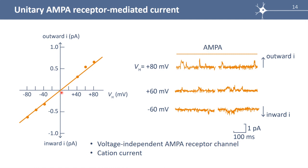Normally, the reversal potential indicates which ions cross the channel. This reversal potential does not correspond to any of the equilibrium potentials we studied before: E_Na is around plus 58 millivolt, E_K is around minus 90 millivolt, and E_calcium is nearly plus 120 millivolt. This means the channel is permeable to more than one ion type. The fact that the IV curve is linear shows that the channel is voltage independent, and the reversal at zero millivolt suggests that this is a cation current.